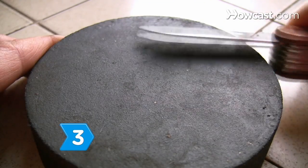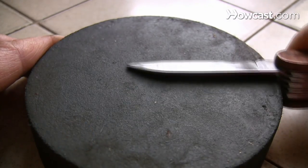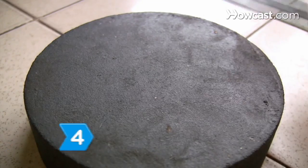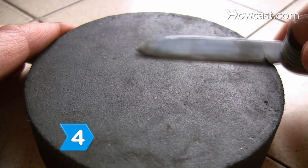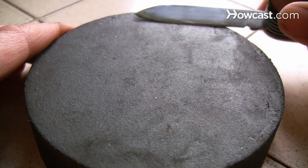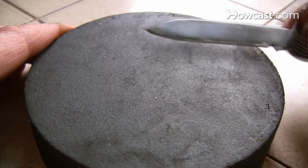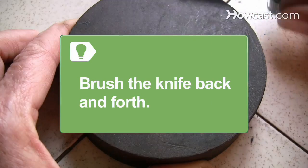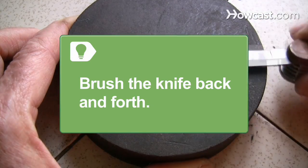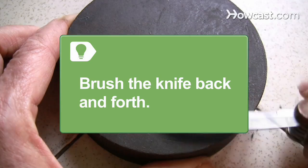Step 3: Push the blade across the stone as if you were slicing a thin layer off the top. Step 4: Pull the blade across the surface towards you to sharpen the other side. Brush the knife back and forth as described to evenly sharpen both sides more efficiently.